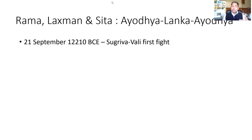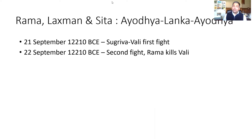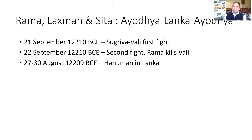Rama and Lakshman started searching for Sita and eventually met Sugriva and Hanuman. The first duel between Sugriva and Vali took place on 21st September 12,210 BCE. The second duel took place the next day on 22nd September, in which Rama killed Vali. Eventually Hanuman reached Lanka — that was 27th through 30th of August 12,209 BCE.